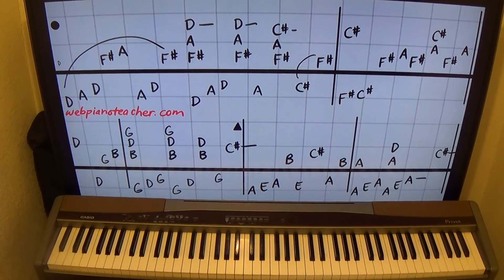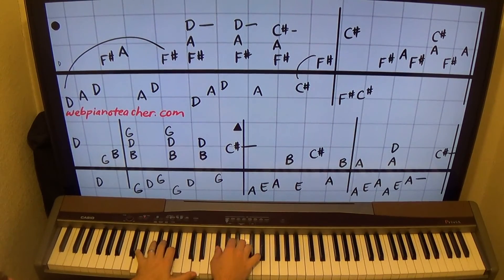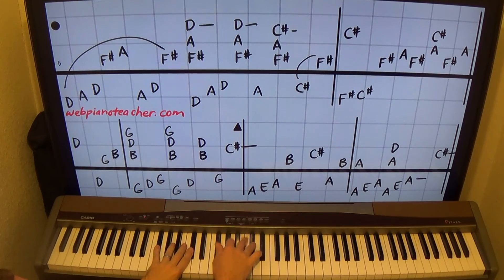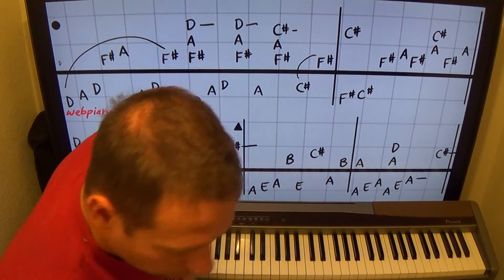So from the very beginning, let's do both measures. D chord, F sharp minor chord. Ready, go. One, two. And there you go. Hope you guys enjoyed that.